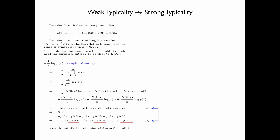Obviously, we can make expressions 1 and 2 equal by choosing q(i) equals p(i) for all i — that is, q(0) equals 0.5, q(1) equals 0.25, and q(2) equals 0.25. Alternatively, we can choose q(0) equals 0.5, q(1) equals 0.5, and q(2) equals 0.